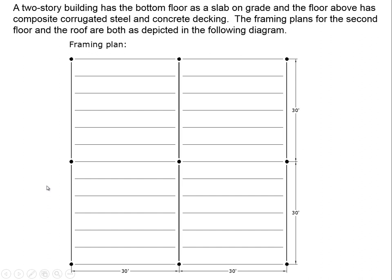We're still talking about the two-story building which has a bottom floor as a slab on grade and the elevated floor as a composite decking of corrugated steel and concrete. The framing plans for the elevated floor and the roof are both as depicted in the following diagram. We've got columns every 30 feet, perimeter girders, interior girders, and a series of joists or secondary beams — we can call these girders and these joists.